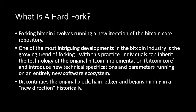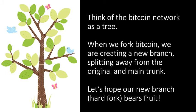This will discontinue the original blockchain ledger and begin mining a new direction historically. One of the best ways to understand this concept is to compare it to a tree. If you think of the Bitcoin network as a tree, the original and main blockchain would be the trunk, and when we fork Bitcoin we're essentially creating a new branch and splitting away from that main trunk. It still references the old network, but it heads in a new direction. So let's hope our new hard fork bears us fruit — an interesting analogy: Bitcoin is like a tree.